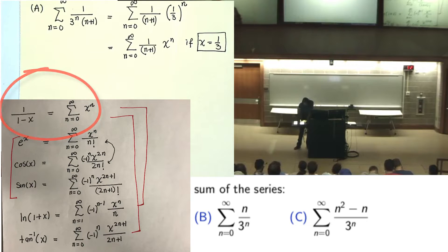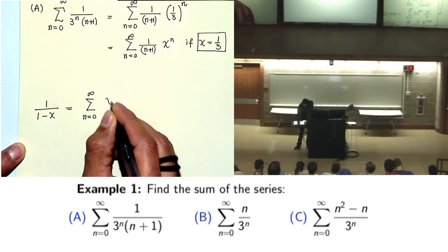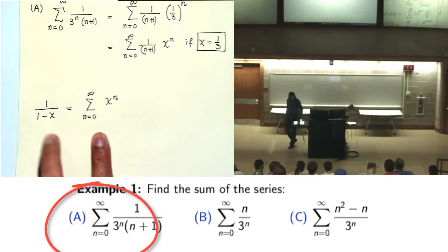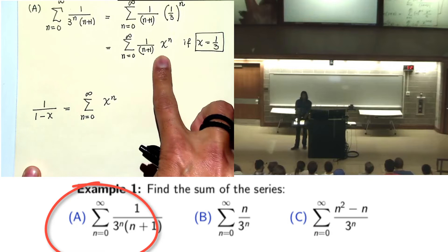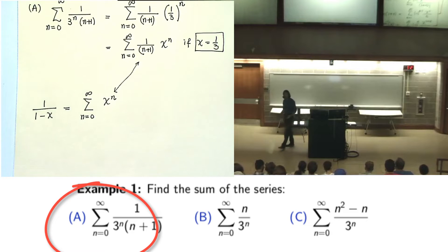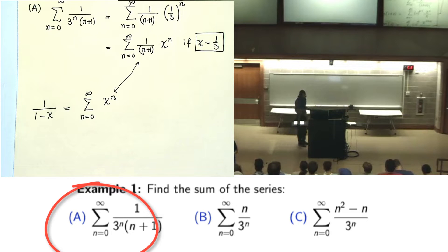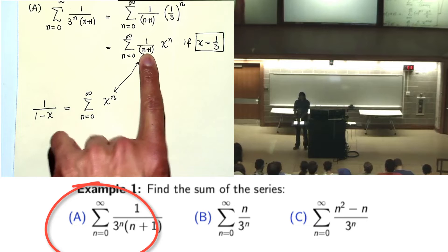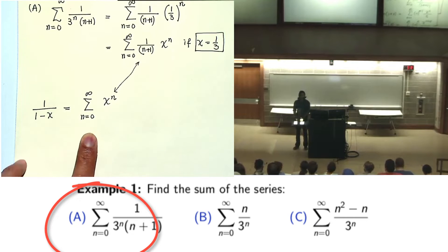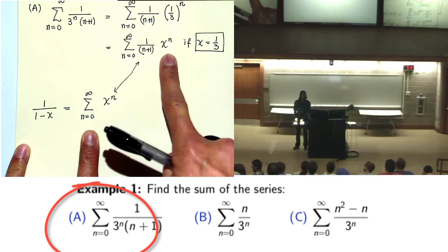I will go into my generic series. My generic series is 1 over 1 minus x, because this does not have any factorial. When the series does not have any factorial, I tend to use this series. The McLaurin form of 1 over 1 minus x is: n varies from 0 to infinity, x raised to power n. Now compare this series and the target series — they are very close, but there is a factor of n plus 1 in the denominator. So I need to produce that factor.